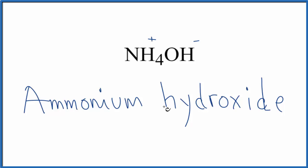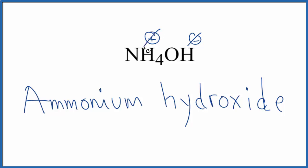If you were given the name and asked to write the formula, you'd have to know or be able to look up that ammonium is NH4 with a positive charge, and that hydroxide is OH minus, it's negative. Because of that, this positive and this negative cancel out, the charge is zero, and the formula for ammonium hydroxide is just NH4OH.